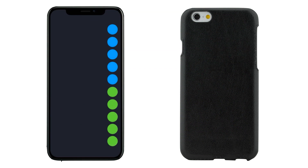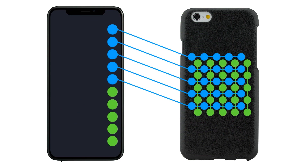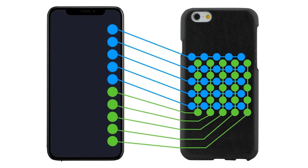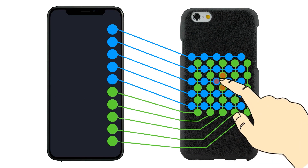We use two groups of electrodes on the back, each connected to a separate 1D array of electrodes on the front. When a finger touches the electrodes on the back, it simultaneously activates two electrodes on the front screen, each in a separate group. The two electrode activations encode the X and Y coordinates of the touch position.